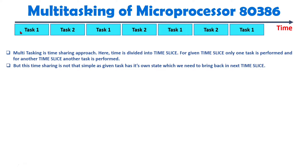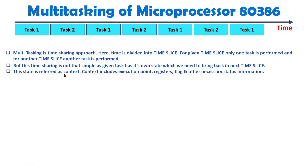When you execute any task, it has its own state, and you will have to bring back that state when you recall that task again. Task one is performed in time slice one, and when that time slice ends, the program is not ended. So when you bring that task back again, the state which was there with task one needs to be recalled. This state is referred to as context. Context includes the execution point, data of registers, data of flags, as well as necessary status information needed when recalling that task in a given time slice.